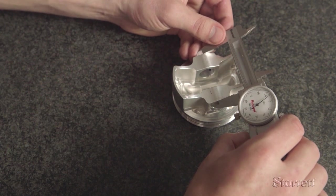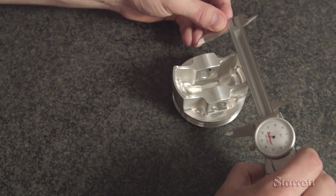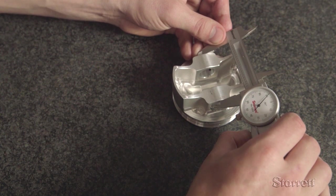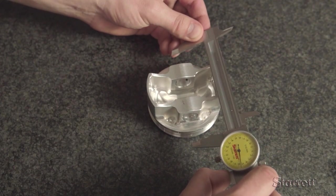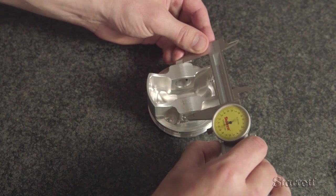To measure an OD, open the slide beyond the feature to be measured. Then slowly close it until contact is made, but don't squeeze too hard. As you gain more experience, your touch and therefore your accuracy will improve.